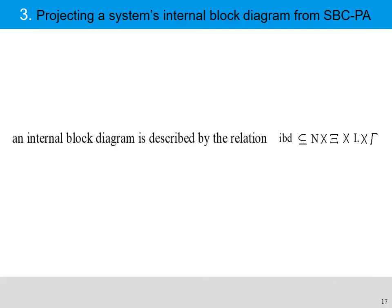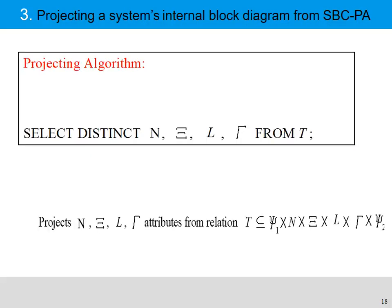An internal block diagram can be described by a relation IBD with four attributes. An attribute is operational call or return tag. The second attribute is a caller agent. The third attribute is operational call or return signature. The last attribute is a callee agent or callee component. We have the projecting algorithm here.